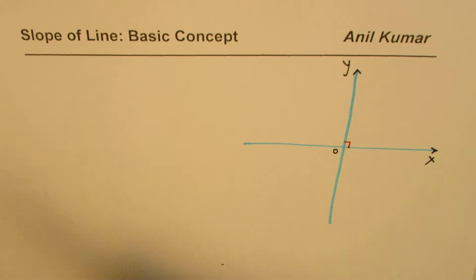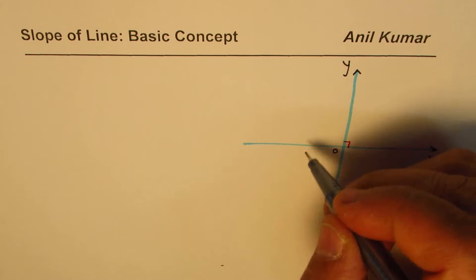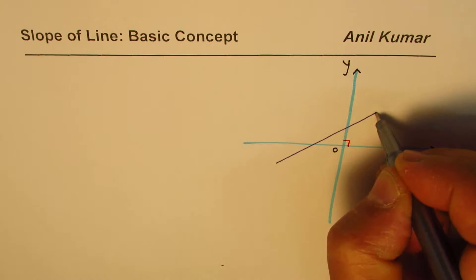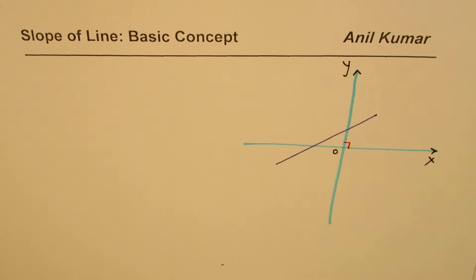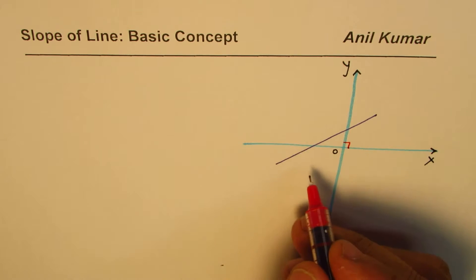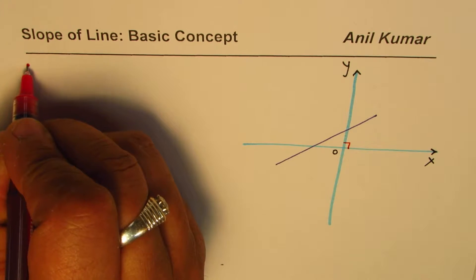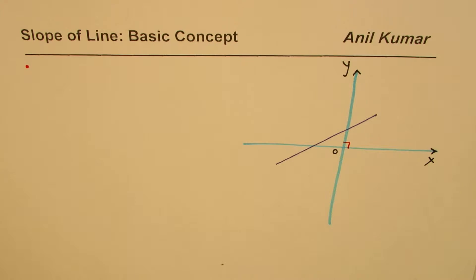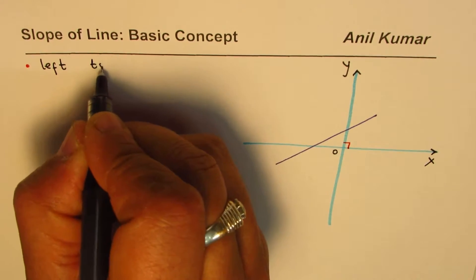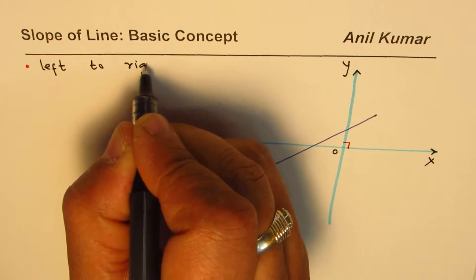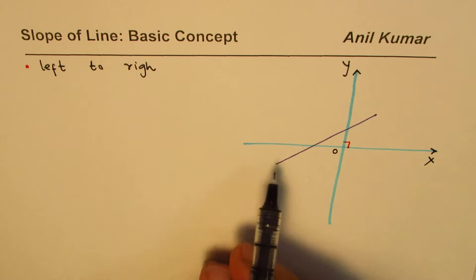Now we are talking about slope of lines. If I sketch a line which is rising, a line which is kind of rising, this line you have to see from left to right. Whenever we are talking about slope, on a graph we have to see the lines as they move from left to right. This is important.